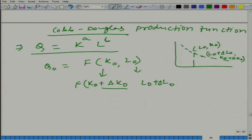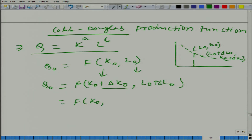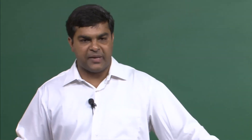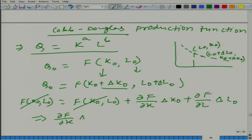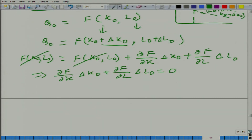In both cases this should also give us the same level of output. So if you know the Taylor series expansion, then it is very simple. What we can write is this is equal to f(k-naught, l-naught) plus, of course, we will take the approximation, because the Taylor series expansion will have infinite terms that we will not use. So just the first terms.